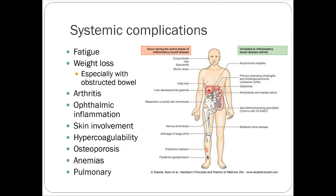Systemic complications of Crohn's go well beyond the GI tract. Fatigue and weight loss are common, especially with malnutrition or obstructed bowel. There's overlap with other autoimmune diseases — psoriatic arthritis, rheumatoid arthritis — and Crohn's can also cause arthritic components. Additional complications include ophthalmic inflammation, skin involvement, hypercoagulability, osteoporosis, anemias, and pulmonary issues, affecting a fair number of systems in severe cases.